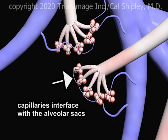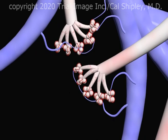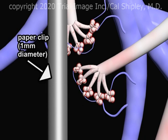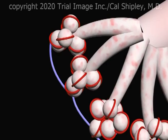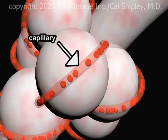Taken all together, the capillaries and alveolar sacs are termed the alveolar-capillary complex. Just to give you some sense of the size of these structures, here is the shaft of a typical paper clip, which is about one millimeter in diameter. Moving in closer now, we can see the intimate physical relationship between the capillaries and the individual alveoli. The capillaries are made semi-transparent, exposing the individual red blood cells circulating through them.